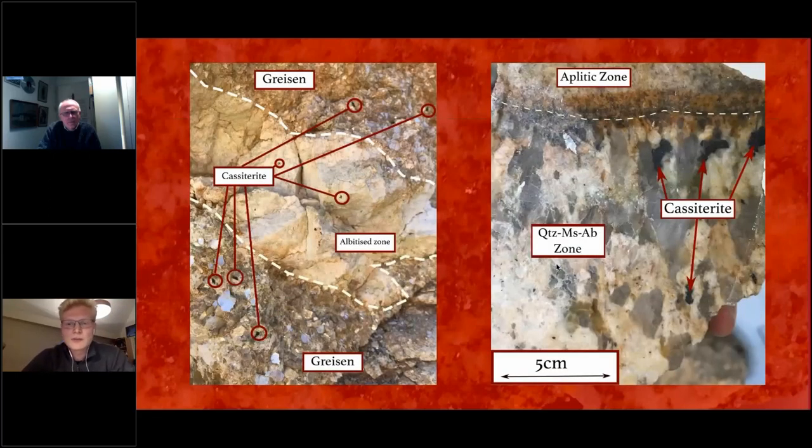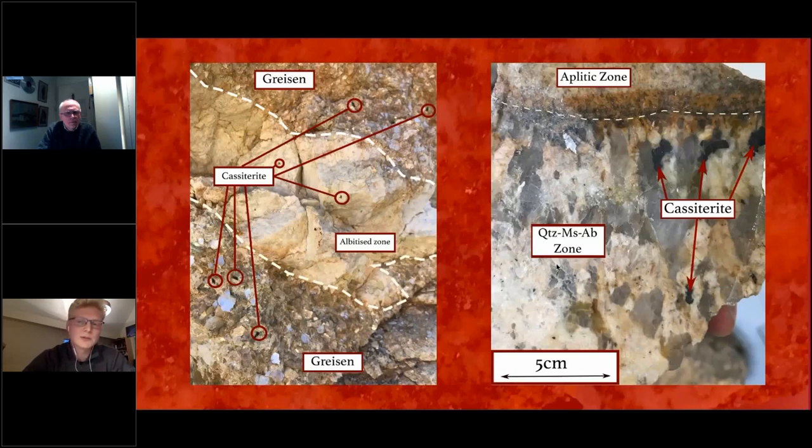While all this is happening, you get to this end stage melt where you have the concentration of basically all the incompatible elements in your granitic melt. So your mineralising phases like tin, tantalum and niobium will crystallise out as cassiterite and columbite group minerals in these niobium, tantalum, tin pegmatites.